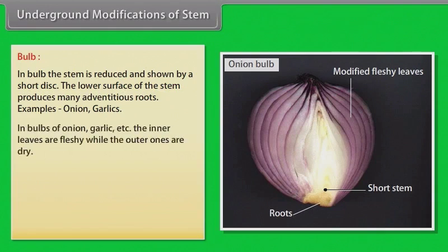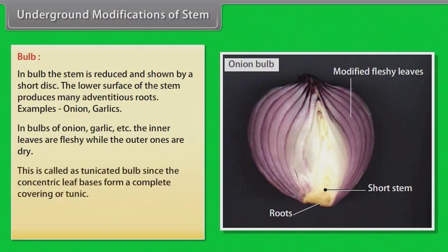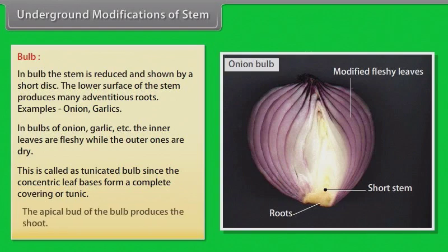In bulbs of onion, garlic etc., the inner leaves are fleshy while the outer ones are dry. This is called a tunicated bulb, since the concentric leaf bases form a complete covering or tunic. The apical bud of the bulb produces a shoot.